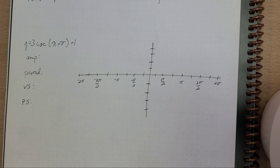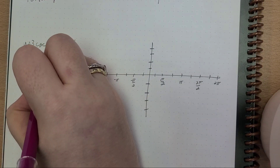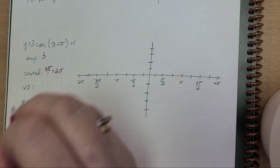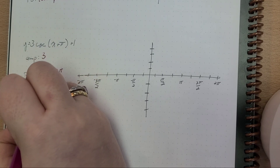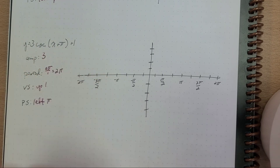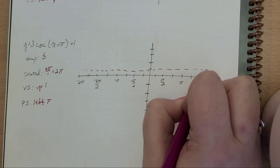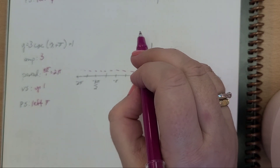3 times the cosecant of (x + π) + 1. Well, the amplitude here is 3, the period is 2π over 1, which is just 2π — nice and easy. Vertical shift is up 1, and phase shift is left π. So first of all, let's do our vertical shift up 1 — we should always start with that. So vertical shift up 1, our amplitude is 3.